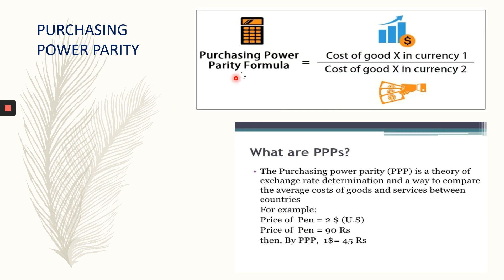Let me explain this concept — purchasing power parity. To calculate purchasing power parity, we have a formula: cost of good X in currency 1 divided by cost of good X in currency 2. We are making a comparison between two countries using the same good but two different currencies. What do we mean by purchasing power? It means the buying capacity. And parity means equal — we are comparing two equals. So purchasing power parity means comparing the buying capacities of two currencies.